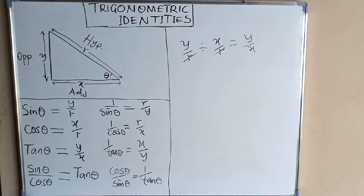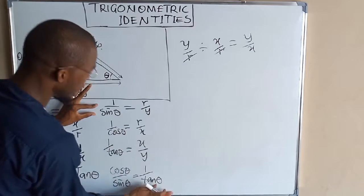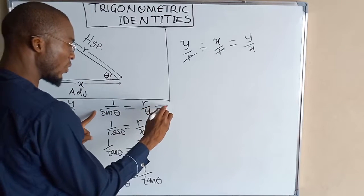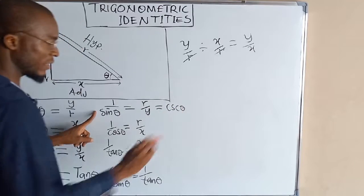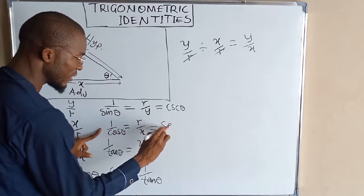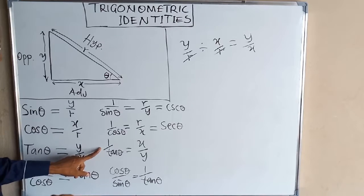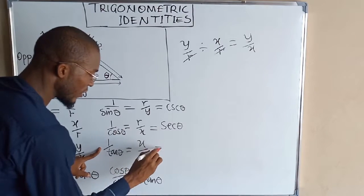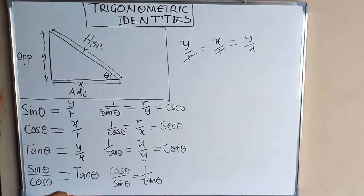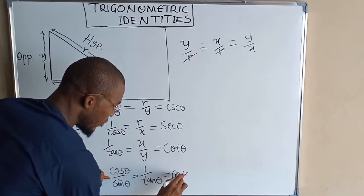The general term used for the reciprocal of sine is cosecant of theta, and the reciprocal of tangent is cotangent of theta.